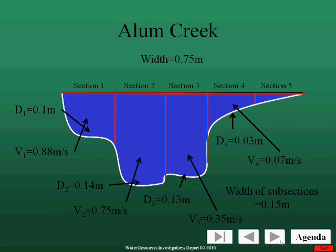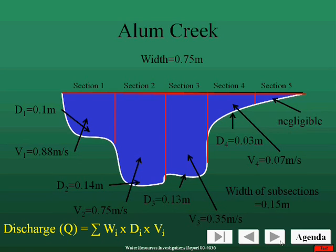Finally, in subsection 5, the depth was so low that we could not get an accurate velocity reading, so the discharge for that section is considered negligible. Now that we have all the pieces, we can find the total stream discharge by multiplying the individual areas by their corresponding velocities and then summing these individual discharges.